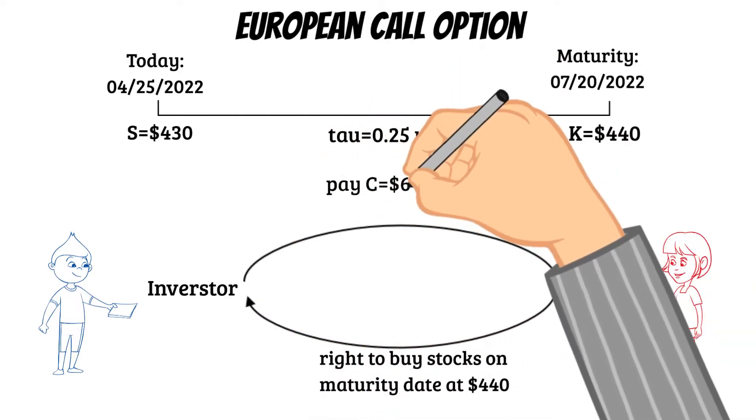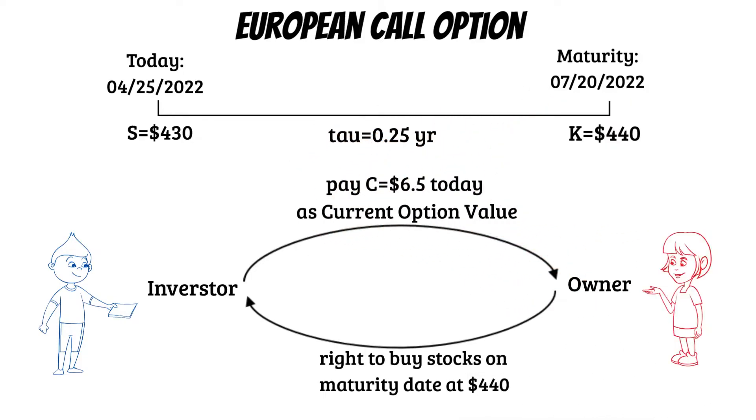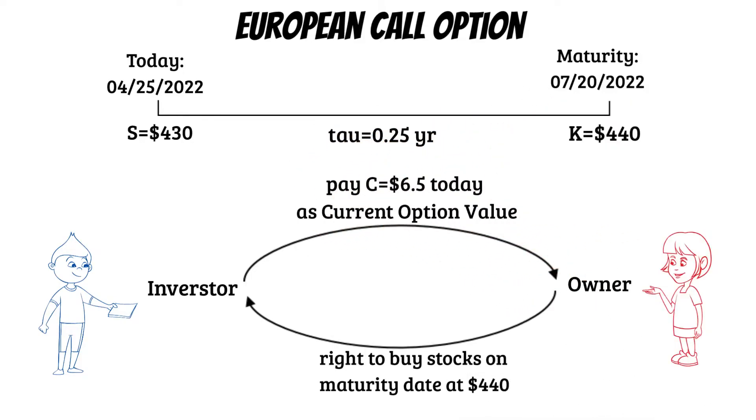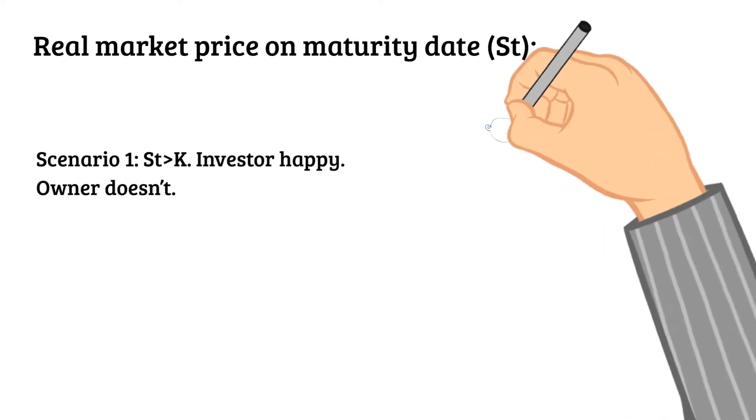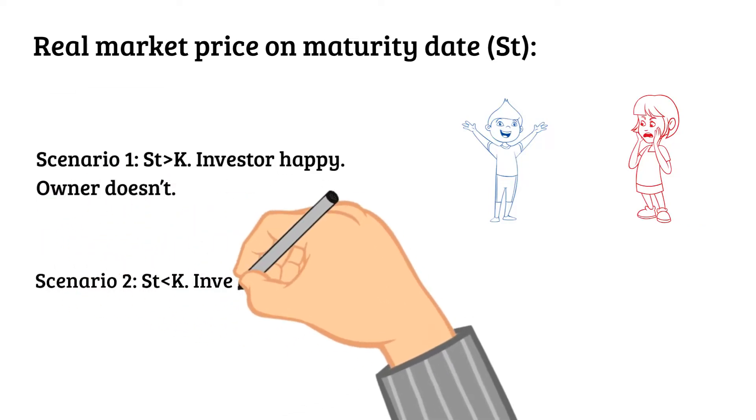After three months on the maturity date, the market price could have two possibilities. If the market price then is higher than $440, then Blue will be happy since he can buy the stocks with less money. If the market price is lower than $440,